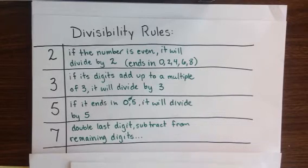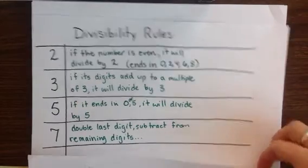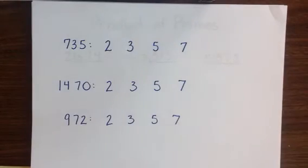So let's take a look at a couple of examples of these. The first number we're going to look at, or the three numbers we're going to be looking at, are 735, 1470, and 972.